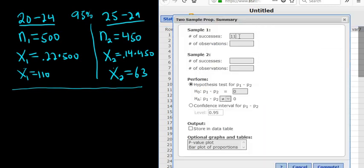Successes is 110. And then Observations is 500. And then here, Successes is 63. And then Observations is 450. And this is a confidence interval, so we want to make sure we click on Confidence Interval. The level is 95%, so we leave it at 0.95.